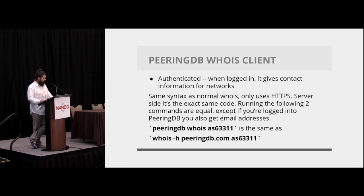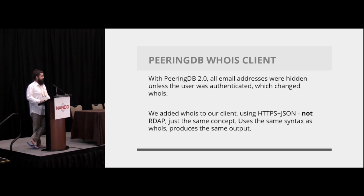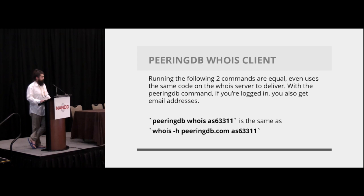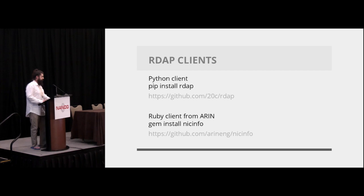This is an example of using HTTP instead of WHOIS. When we released PeeringDB 2, we took away email addresses so we wouldn't publicly give them out unless you were logged in. Lots of people used the PeeringDB WHOIS server and complained that email addresses were gone. We said it's not authenticated, we're not going to bring them back — but we can make you a client that works exactly like WHOIS except it uses HTTP and JSON, which is what we did. The two commands are functionally identical. The WHOIS server for PeeringDB uses the exact same code as the client does to output text. But if you're logged in with an API key in your config file, you will get email addresses.